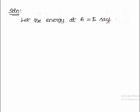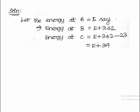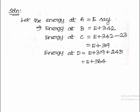Let the energy at point A be E. Energy at point B will be E plus 342, a positive fluctuation above the mean resistance line. Energy from point B to C results in E plus 319. Similarly at point D, the energy is E plus 564.